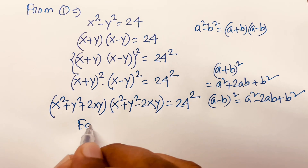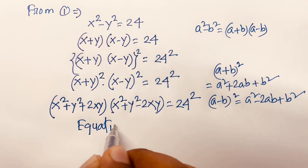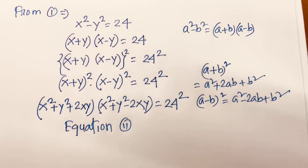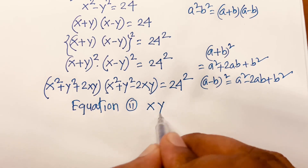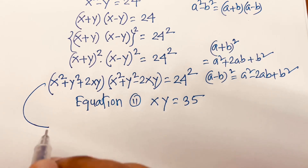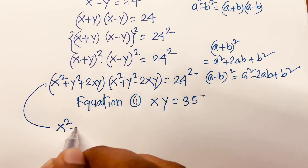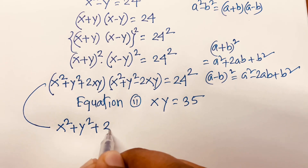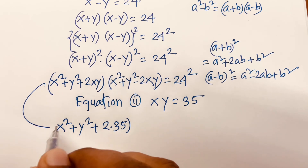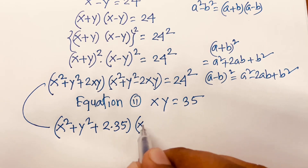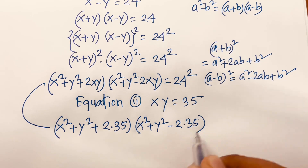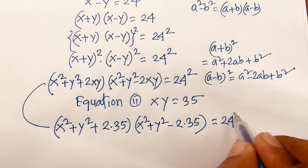Equation 2 is xy equals 35, so I can say xy equals 35. This equation becomes (x² + y² + 2×35)(x² + y² - 2×35) equals 24 squared.